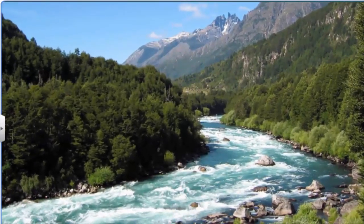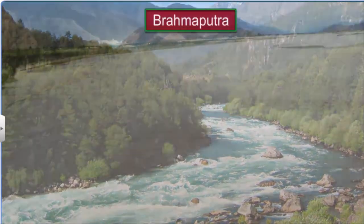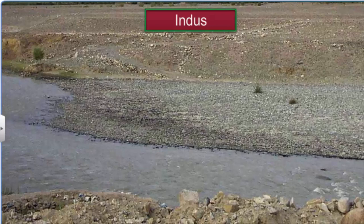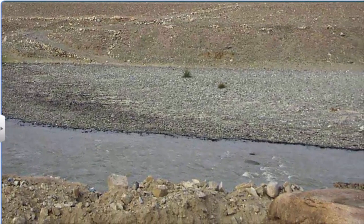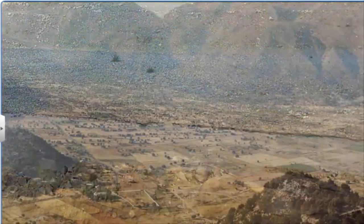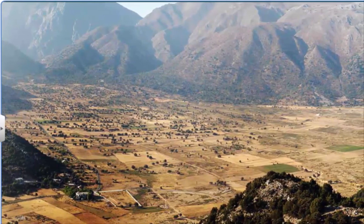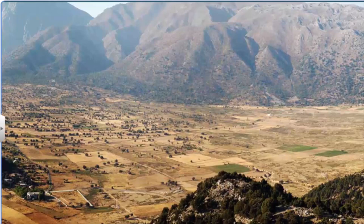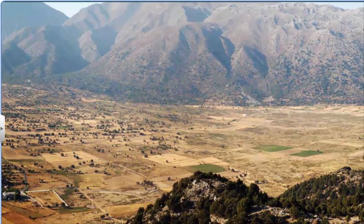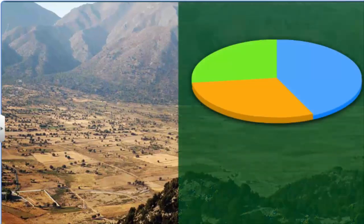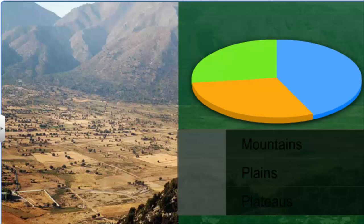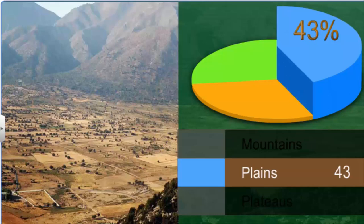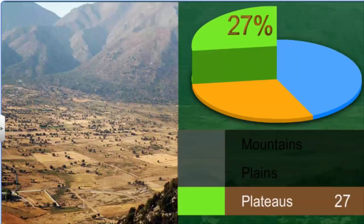The mountains allow perennial flow of rivers like the Ganges, the Brahmaputra, and the Indus, and enhance tourism and ecological prospects too. A plateau is an elevated, comparatively level expanse of land. Plateaus are rich reserves of minerals, fossil fuels, and forests. Land in India can be divided into three main relief features: around 30% is occupied by mountains, 43% is plain, and 27% is in the form of plateau.